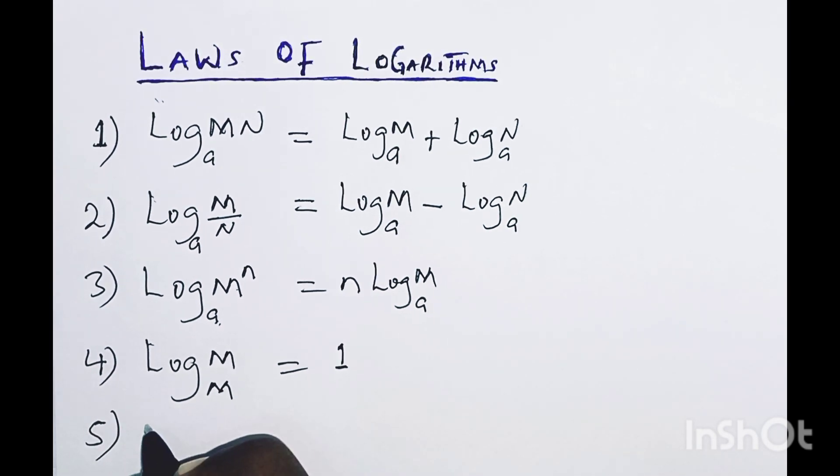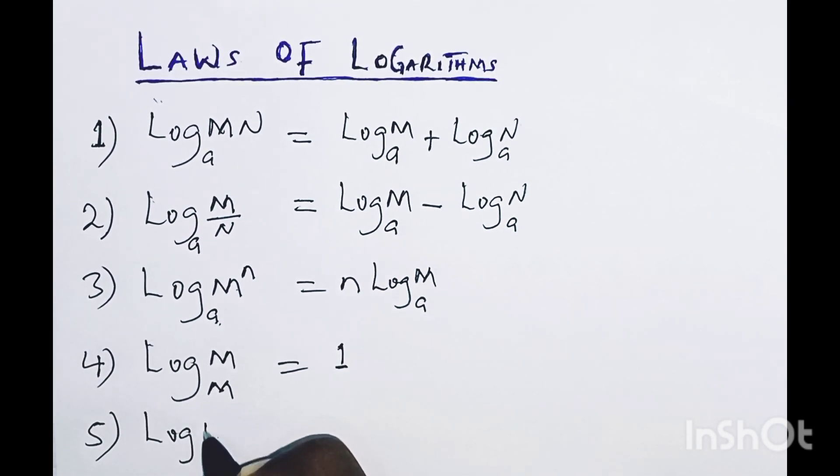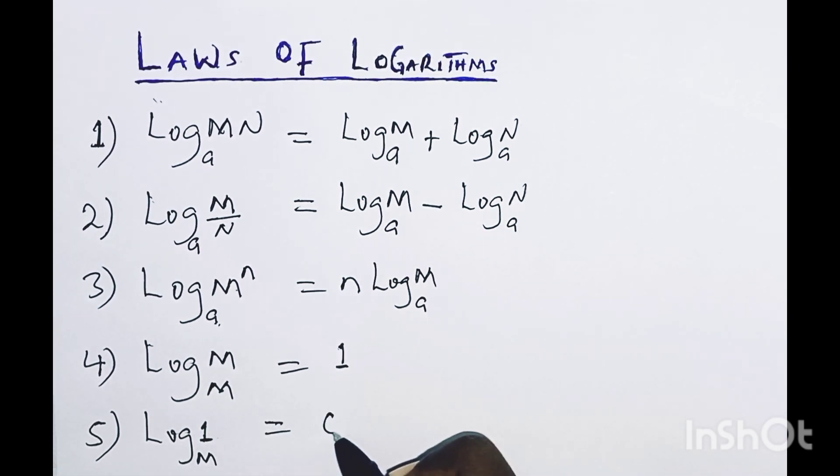Then law number five: if you have log base m of one, if it is log one, no matter what the base is, then the answer is going to be zero.